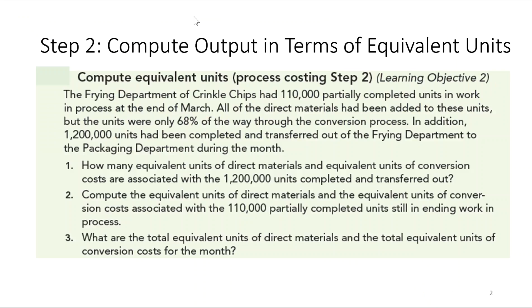Step two is to compute output in terms of equivalent units — this is usually the part students struggle with the most. The frying department of Crinkled Chips had 110,000 partially completed units in work in process at the end of March. All direct materials have been added, but units were only 68% through the conversion process. Additionally, 1,200,000 units were completed and transferred out to the packaging department during the month.